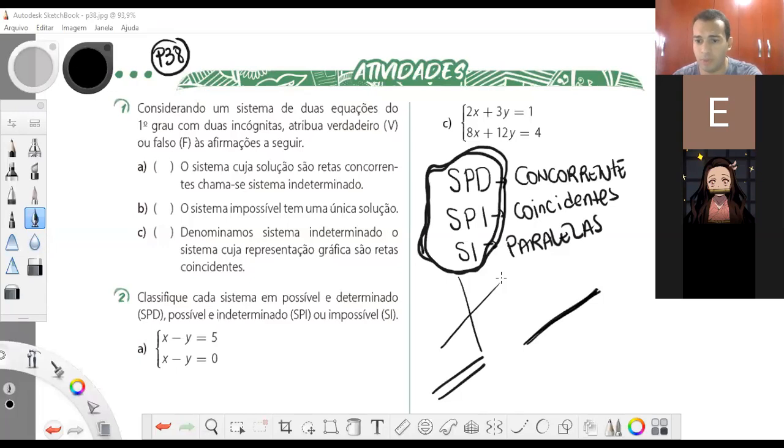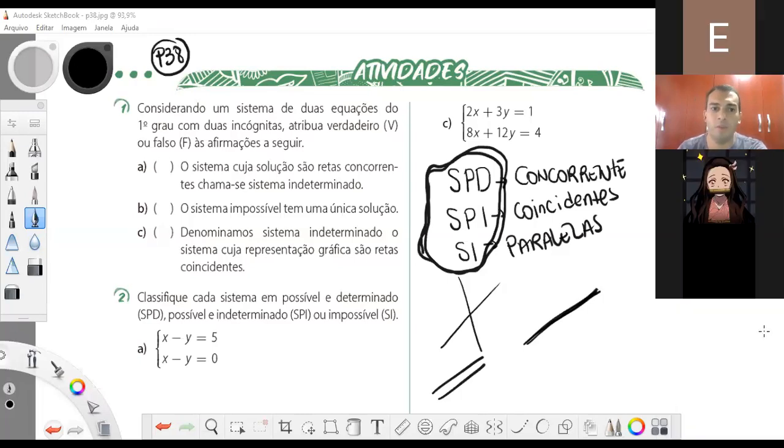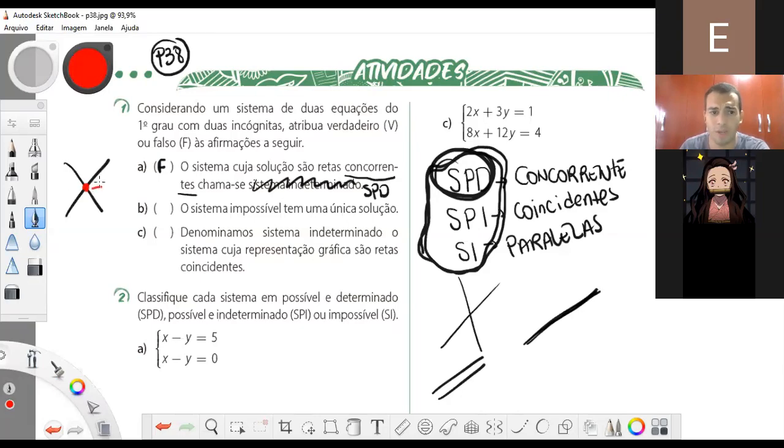Vamos lá. Vamos fazer a número 1. Considerando um sistema de duas equações do primeiro grau com duas incógnitas, atribua verdadeiro ou falso às afirmações a seguir. O sistema cuja solução são retas concorrentes, chama-se sistema indeterminado? Falso. A gente acabou de falar aqui. São sistemas possíveis e determinados. É o SPD. Então, não é sistema indeterminado. É sistema possível e determinado.